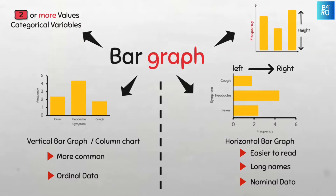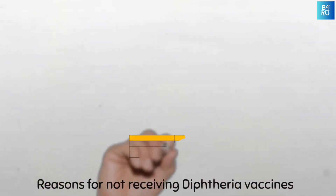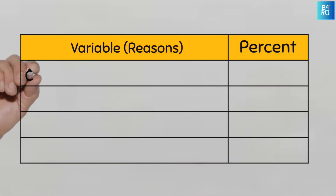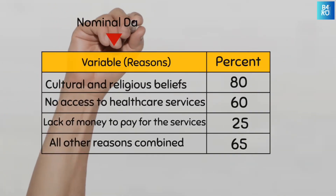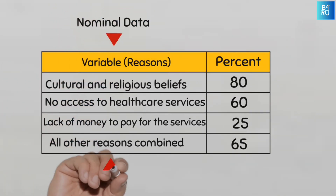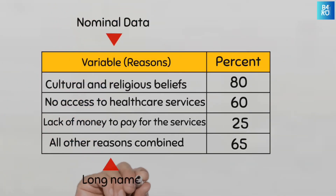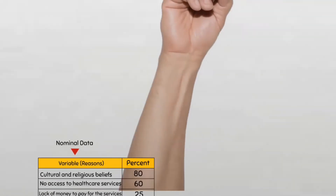Let's look at this example of a categorical variable: reasons for not receiving the diphtheria vaccine. This variable produces nominal data with the categories having long names, and we can see the corresponding percentages for each category.